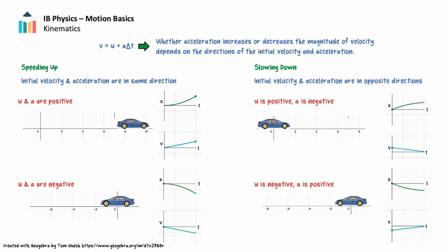Next, an object moving in a negative direction while accelerating in a negative direction: both velocity and acceleration are negative, and the object gets faster — its speed increases. We can see this on a position-time graph where the gradient gets steeper over time. The same motion on a velocity-time graph is a straight line with a negative gradient below the time axis. If the object's initial velocity and acceleration are both positive or both negative — that is, in the same direction — the object will speed up.